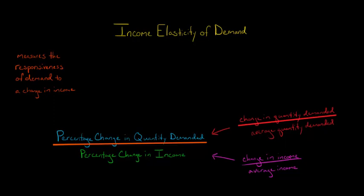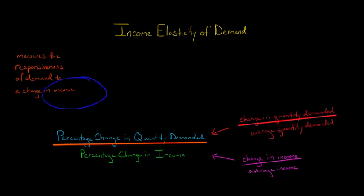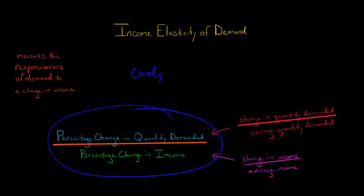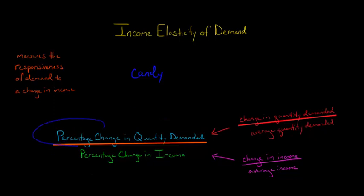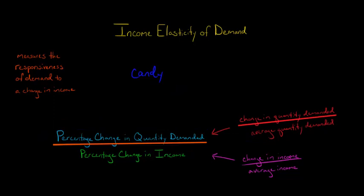In this video, we're going to discuss how to calculate the income elasticity of demand. Income elasticity of demand measures how your demand for a good or service changes as your income goes up or down. So as you become wealthier or poorer, what happens, for example, to your demand for candy? We can calculate it with this formula: the percentage change in the quantity demanded divided by the percentage change in your income.